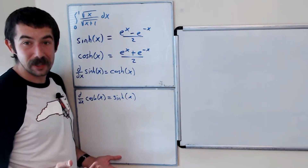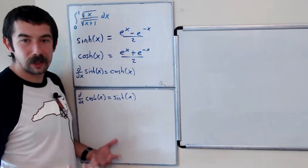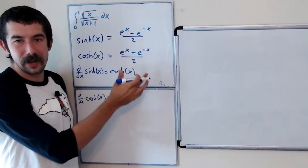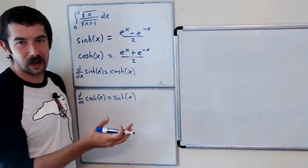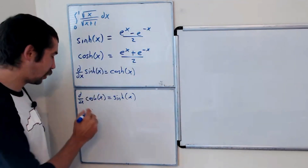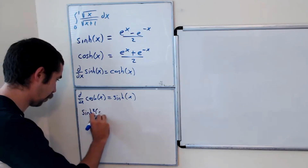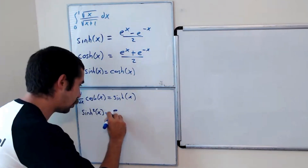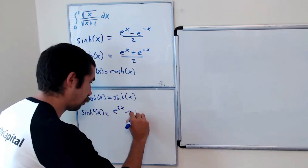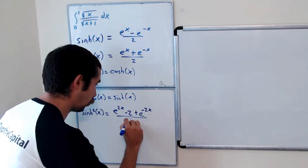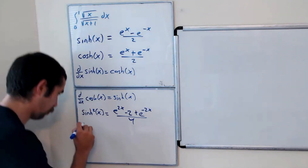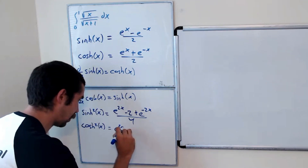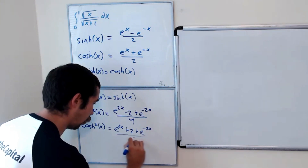We're going to use a hyperbolic trig substitution to evaluate our integral. The substitution is x equals sinh²(θ). sinh²(x) works out to (e^(2x) minus 2 plus e^(-2x)) over 4, and cosh²(x) equals (e^(2x) plus 2 plus e^(-2x)) over 4.